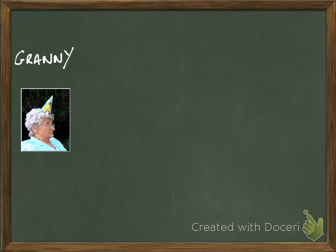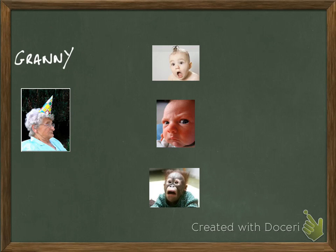I've written Granny there, just in case you can't work out who Granny is. Granny has got some grandchildren. And it's coming up to Christmas and Granny's going to give them some money. She loves them very much, and she's going to give them, let's say, £10 each.